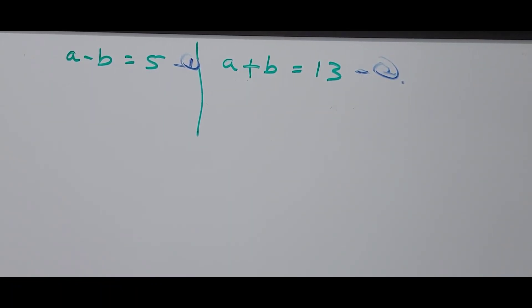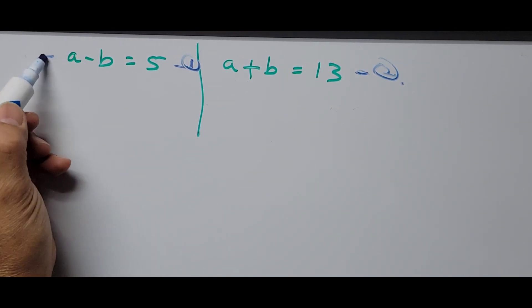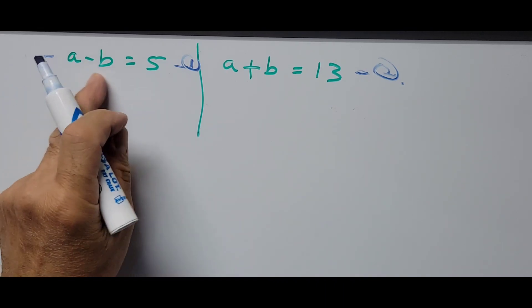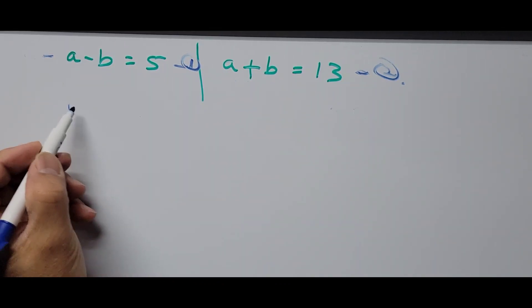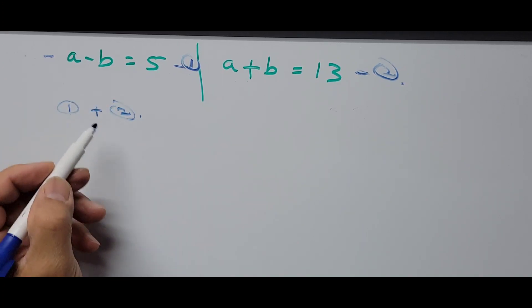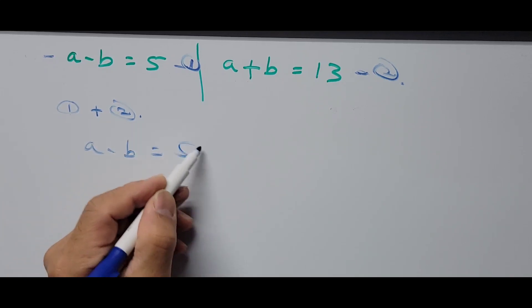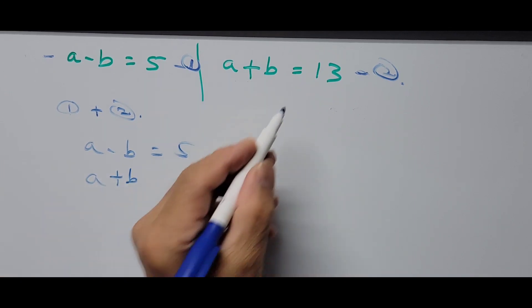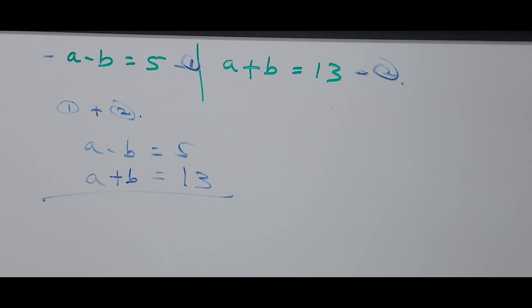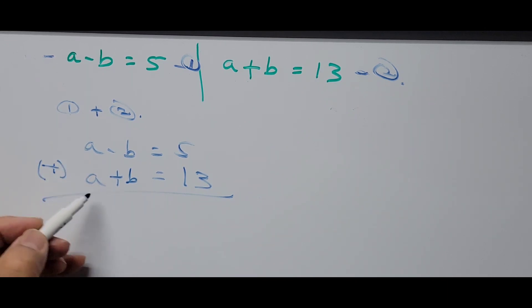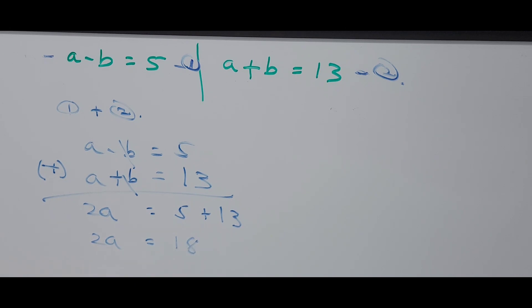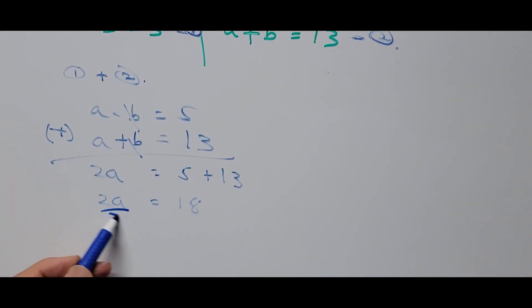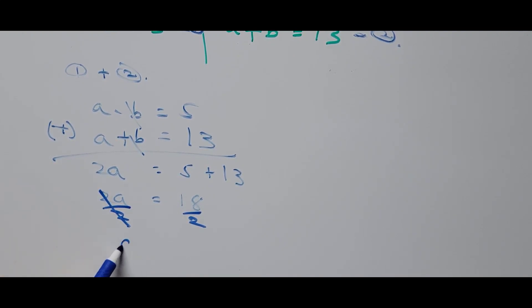From these two equations we use the elimination method, adding equation 1 and equation 2 together. Equation 1 is a minus b equals 5, and equation 2 is a plus b equals 13. Adding them: a plus a gives 2a, the b terms cancel, and 5 plus 13 is 18. So 2a equals 18, and dividing both sides by 2 gives a equals 9.